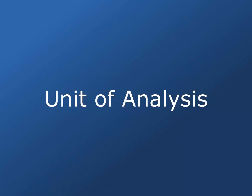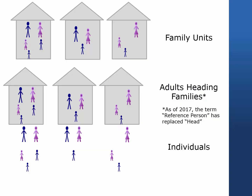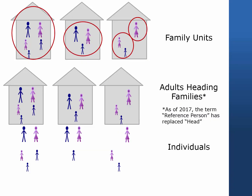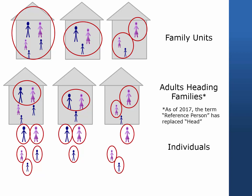Let's begin with an overview of the concept of Unit of Analysis. PSID data can be analyzed in different ways. You can estimate, for example, the characteristics of family units, of adults heading families — what PSID refers to as reference persons and spouse partners — or of all individuals and families.